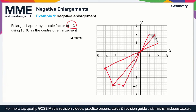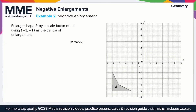In this second example, we have to enlarge shape B by a scale factor of minus one, using minus one, minus one as the center of enlargement — so not the origin this time. Taking the bottom right corner of shape B, we go one square across and four squares up to reach the center of enlargement, and then the same again beyond the center. Since this is a scale factor of minus one, this gives us the new point at zero, three.